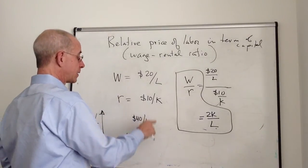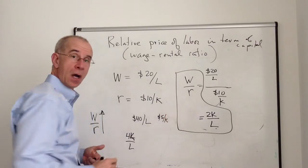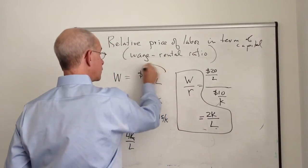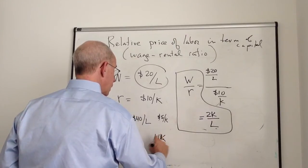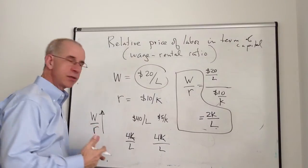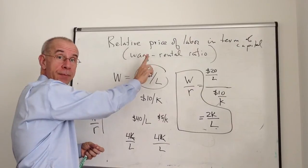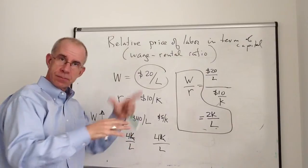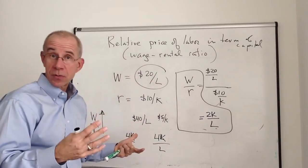If the price of capital went down to $5 per unit and it stayed at $20, we also would have four units of capital for every unit of labor. So the wage-rental ratio can go up for various reasons. Because the wage went up, it could be because the cost of capital went down, some combination, but the wage rose more than the cost of capital, or they both could fall.